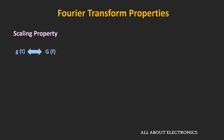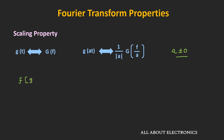The next property is the scaling property. If G(f) is the Fourier transform of g(t), then the Fourier transform of g(at) can be given as (1/|a|)·G(f/a), where a is not equal to zero. Let's prove it. The Fourier transform of g(at) equals the integral from minus infinity to plus infinity of g(at) times e to the power of minus j·2πft dt. We first assume a is greater than zero.